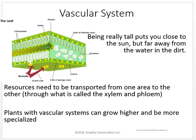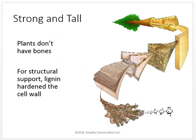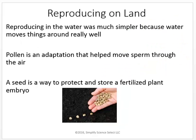Now that plants have vascular systems, they can grow higher and be even more specialized. Plants don't have bones, so instead of having individual specialized bone cells like animals, each cell has a little bit of specialization. Lignin is a molecule that hardens the cell wall and gives extra structural support. Reproducing in water was much simpler because water moves things around for you. Pollen is the adaptation that helps move sperm through the air, and a seed protects and stores a fertilized plant embryo until it's time for it to develop.